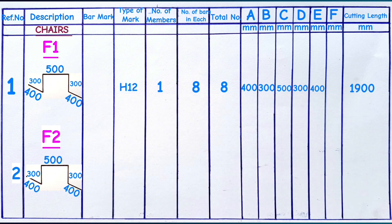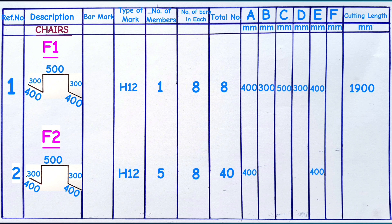The type of mark is H12 since we are using chairs of 12 millimeters bar thickness. Number of members is 5, since we have 5 footings labeled F2 — when footings have the same name they have the same dimensions. Total number is 5 multiplied by 8, giving 40 pieces. Each piece has 400mm legs, 300mm height, and 500mm head, making the total cutting length 1.9 meters.